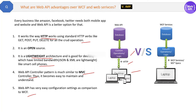Next advantage is WebAPI has very easy configuration settings in comparison to WCF. In short, WebAPI will handle each and every kind of HTTP request. HTTP is the most common format nowadays. With WCF you can also handle HTTP, but there will be a lot more configuration settings which you have to manage in your application, which is difficult to handle.